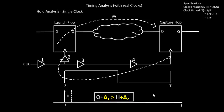We concluded that the combinational delay should be greater than the hold time of the capture flop. Once the clock network delay comes into the picture, the first thing we need to do is shift the clock edges so they reach the launch flop and capture flop by the required amount of time. When this clock edge reaches the launch flop, it takes around two buffer delays, and that is captured as delta1.